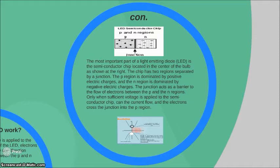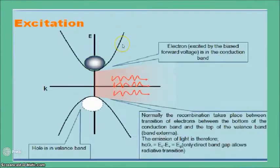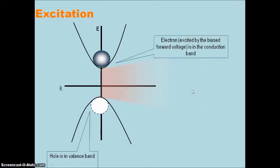The most important part of a light emitting diode is the semiconductor chip located in the center of the bulb, as shown at the right. The chip has two regions separated by a junction. The P region is dominated by positive electric charge and the N region is dominated by negative electric charge. The junction acts as a barrier to the flow of electrons between the P and the N region.